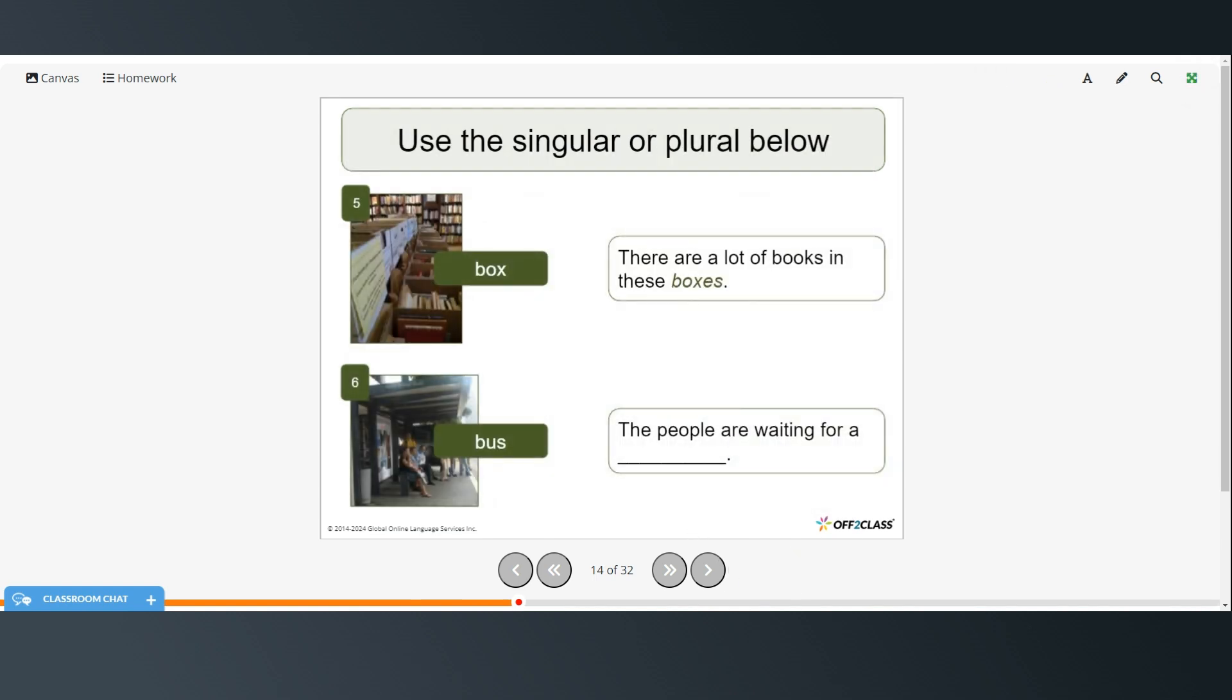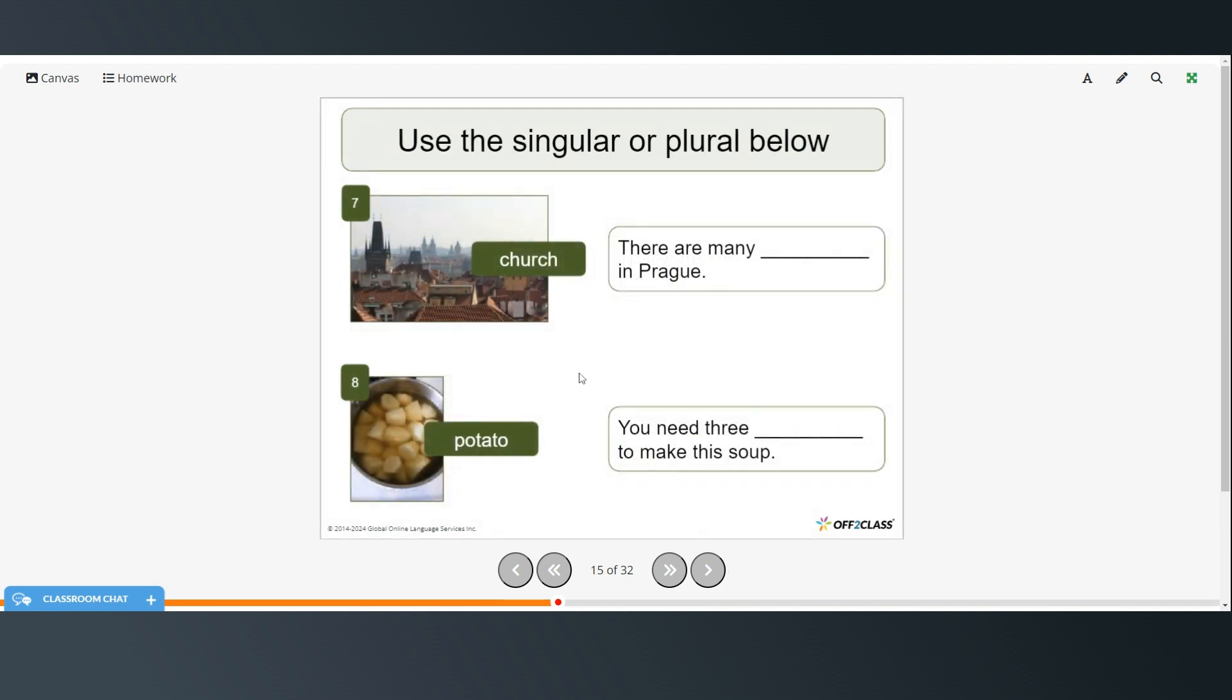Okay, so it says use the singular or the plural below. There are a lot of books in these boxes. And these people are waiting for A. Remember when it's A, we use the singular, because A means one, A bus. There are many, so many means more than one. So here we would have to use the plural, which is churches. And you need three, so here they're telling us it's more than one. So we need the plural, which is potatoes, to make this soup.